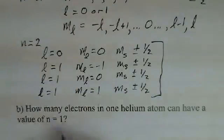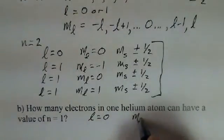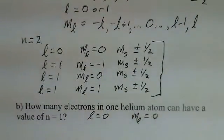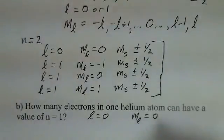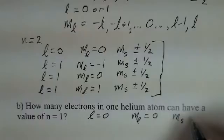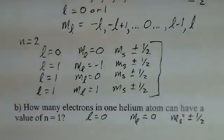If n is equal to 1, then l is equal to 0. The only m sub l is 0, because the list has to stop at minus l and plus l. There's just 1, 0. And then m sub s, our spin quantum number again, plus or minus 1 half for its value.